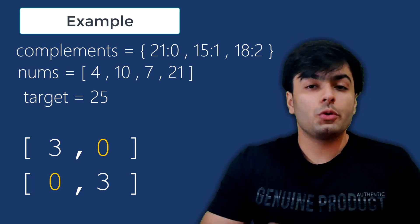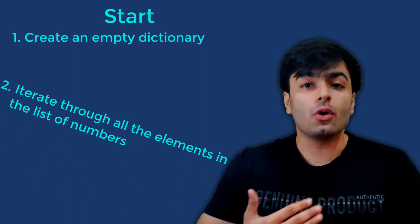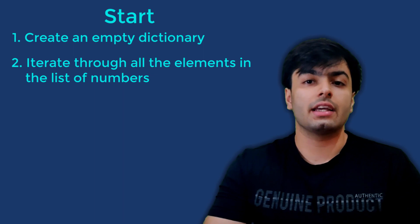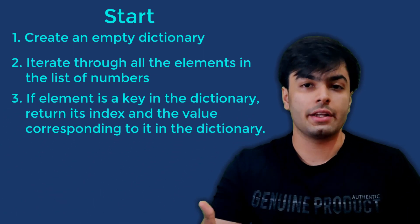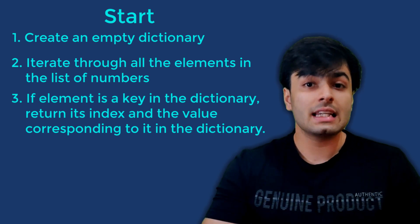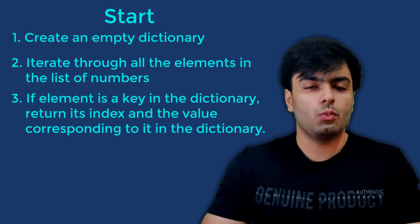To generalize this, we start by creating an empty dictionary. Next, we iterate through all of the elements in the list of numbers, and for each element, we first check if it is one of the keys in the dictionary. If this is true, we simply return the index number of the element and the value corresponding to it in the dictionary, and at this point, we can stop.